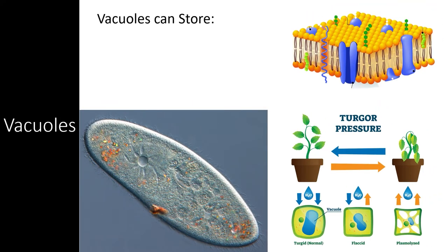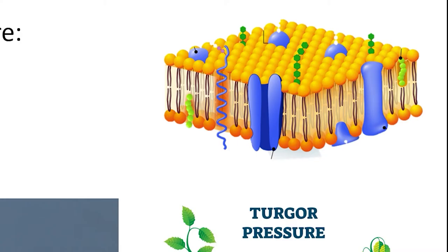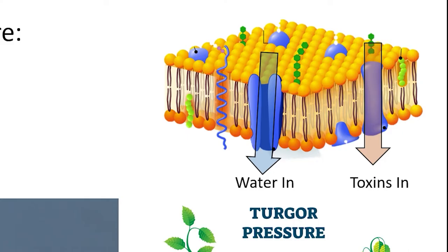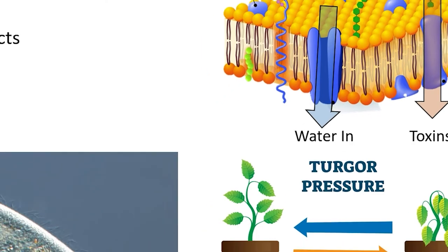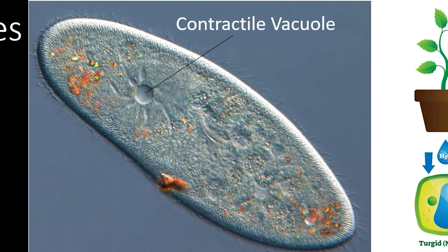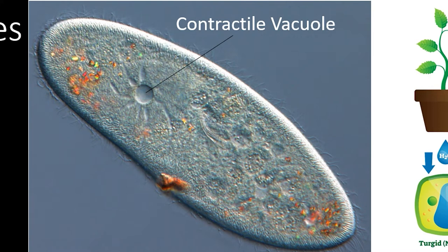Vacuoles are also part of the endomembrane system, and they store a variety of substances. In general, the membrane of a vacuole is loaded with specific proteins that import specific substances into the vacuole. This takes the substances out of the cytoplasm, so the chemistry of the cytoplasm can remain consistent and reliable. A contractile vacuole is found in many freshwater organisms, which live in a hypotonic environment where water is constantly flowing into the cell. The contractile vacuole fills with this water and then pumps it out of the cell at regular intervals, allowing the cell to maintain a consistent pH and water content.